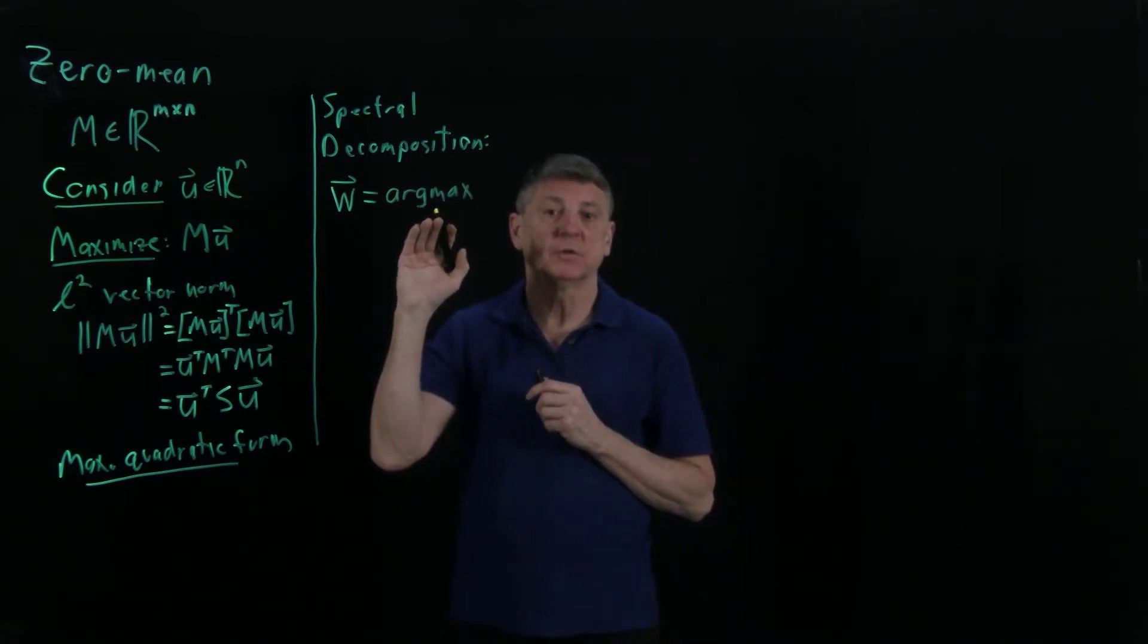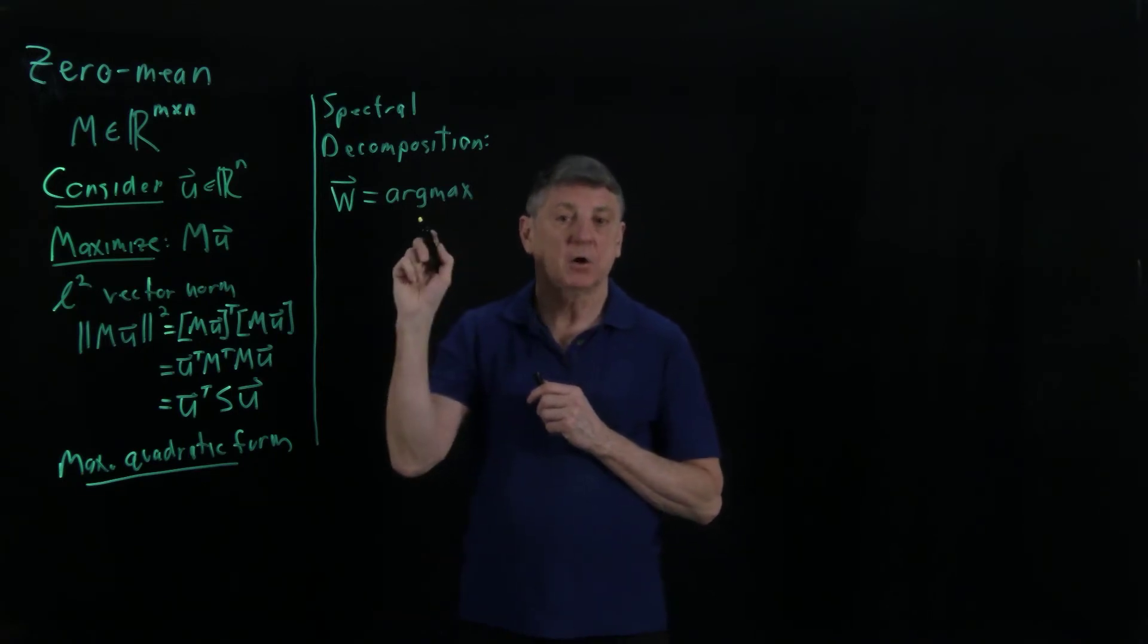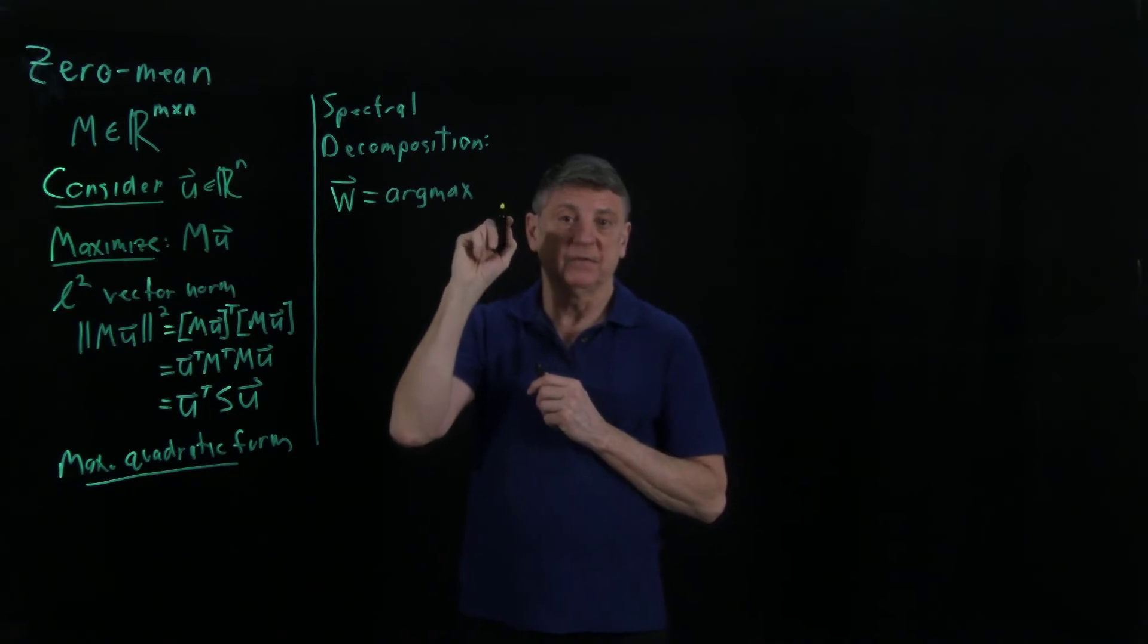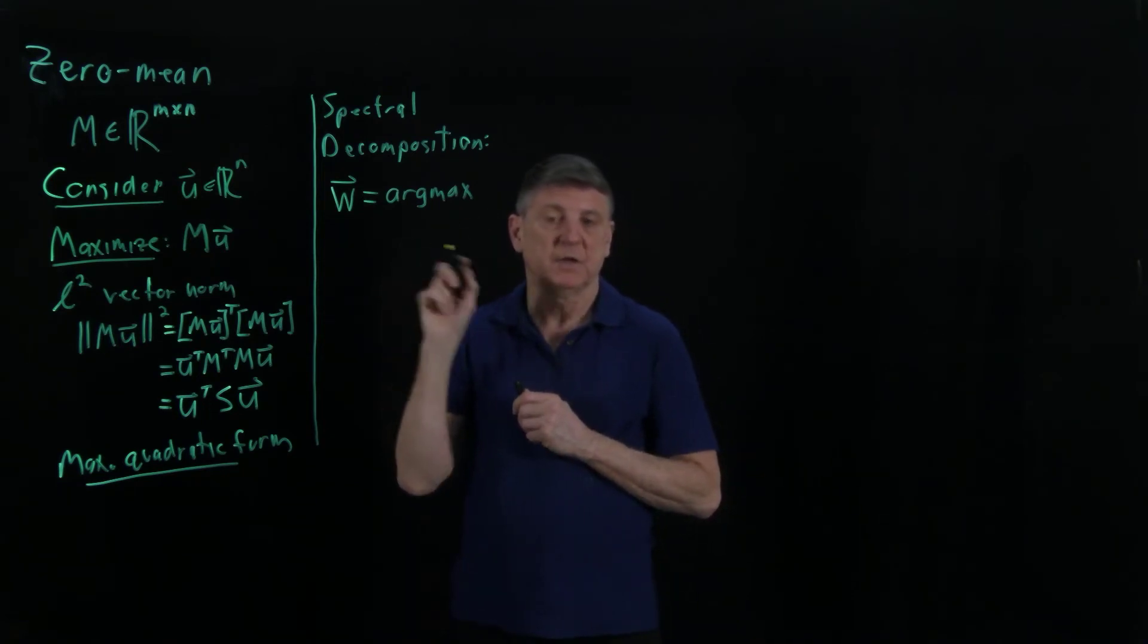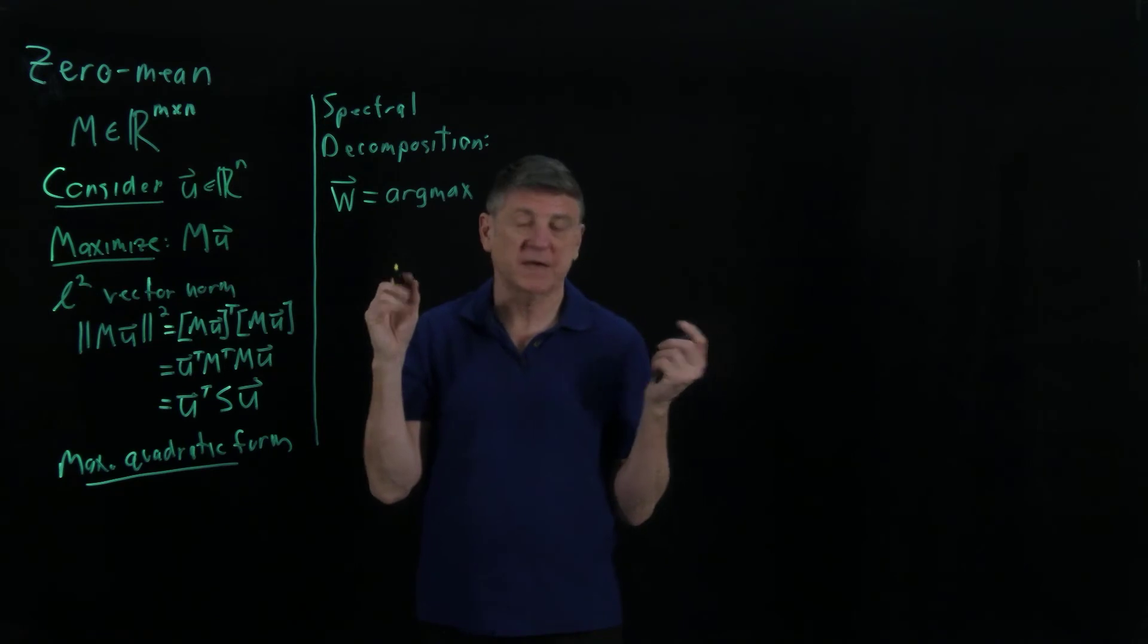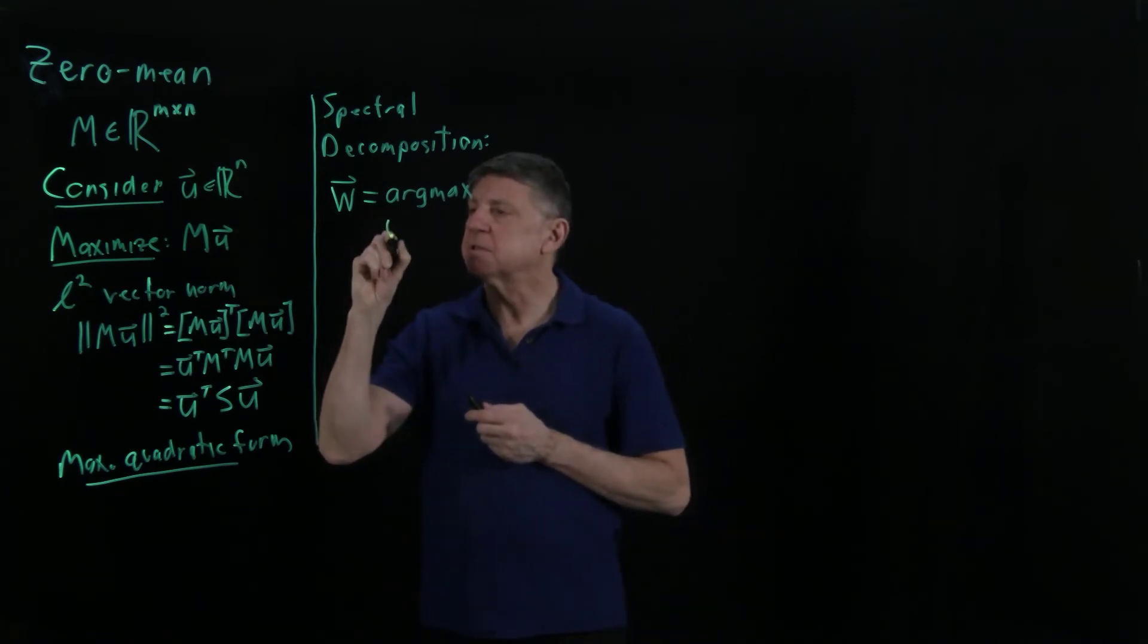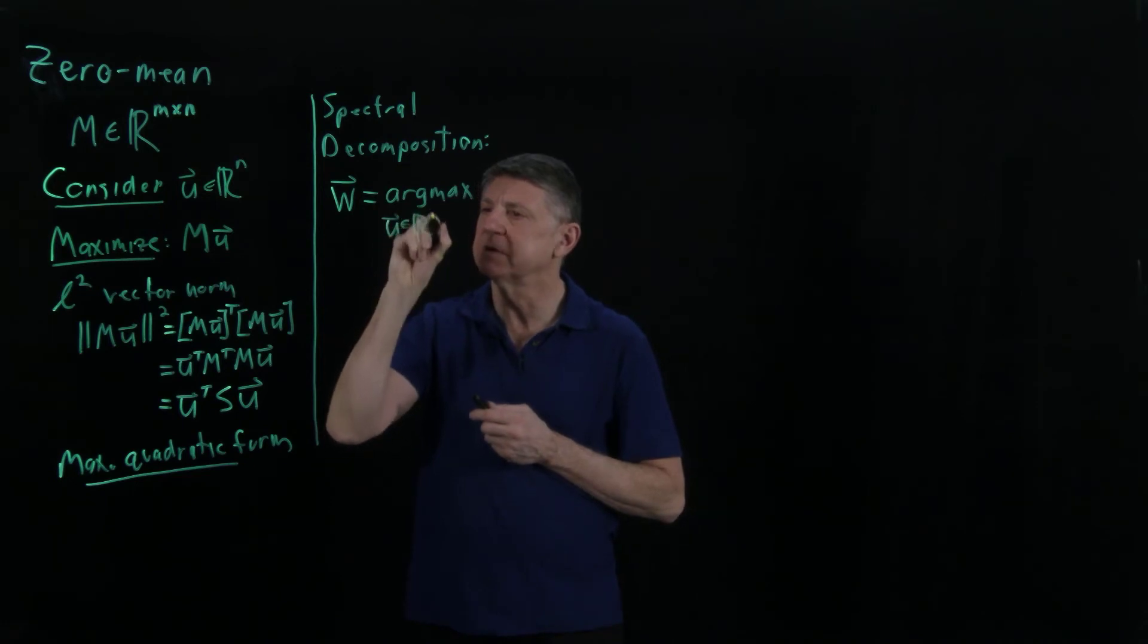Let's recall the difference between a maximum and an argument maximum. A maximum will return the value. The argument maximum is the argument that returns that maximum value. And generally we're really interested in the arg max problem.